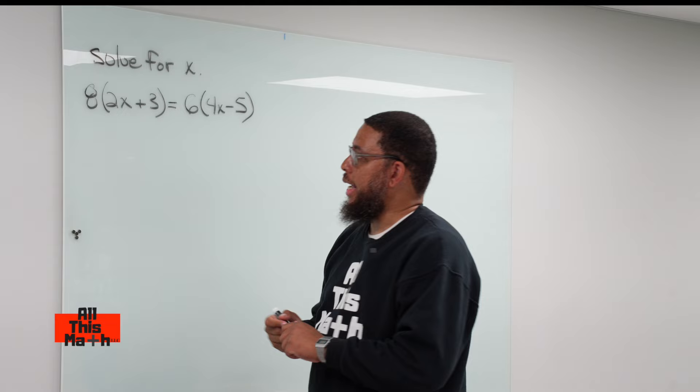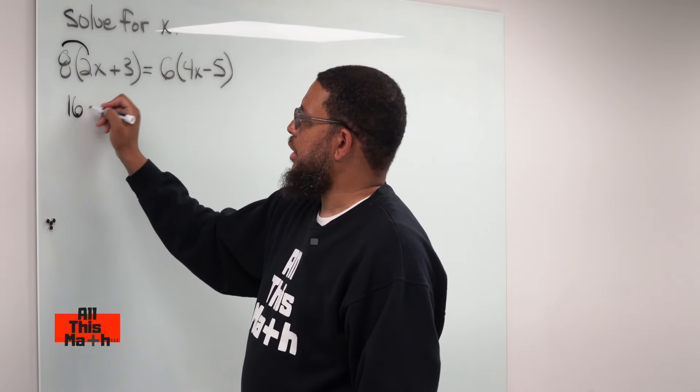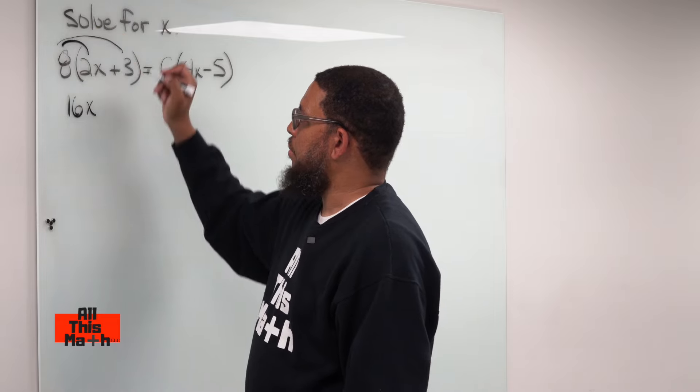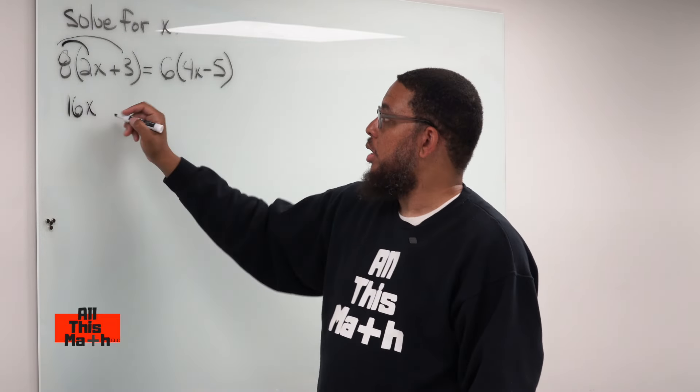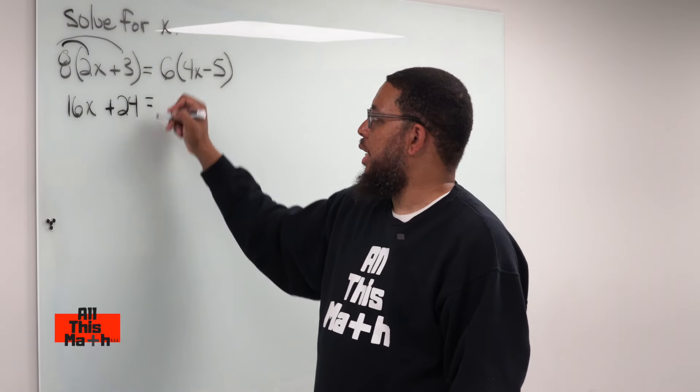So that means we're going to multiply 8 by 2x, which is going to give us 16x, and we're also going to multiply 8 by 3. Remember, don't forget to multiply by the second number. 8 times 3 is 24. Then you bring your equal sign down,